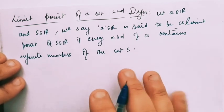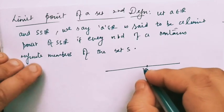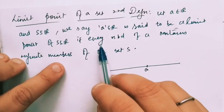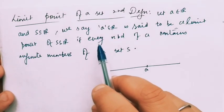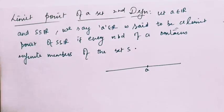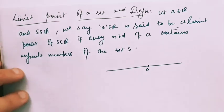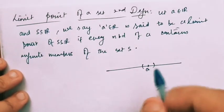Now note that here we are not talking about a deleted neighborhood. You must recall that when we talk about a deleted neighborhood, we talk about points other than A — deleted neighborhood means to delete the point itself. Apart from the point A, whatever points are in that neighborhood are valid. Therefore, every neighborhood of A contains infinite members of S.